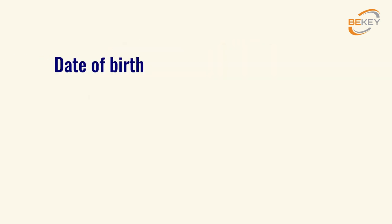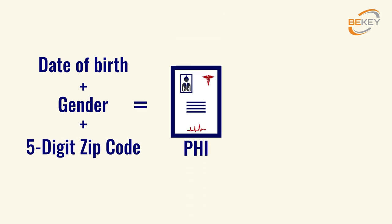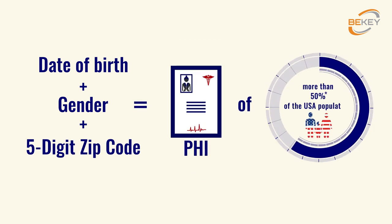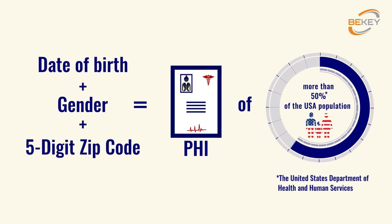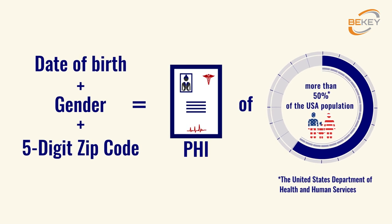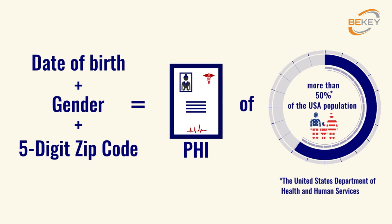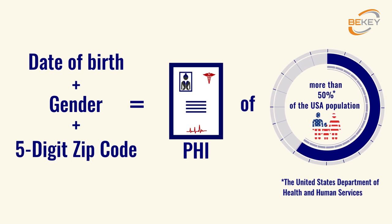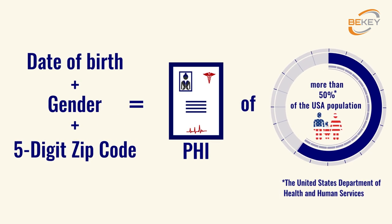Here is an example of a small data set compromising people's privacy from the United States Department of Health and Human Services. More than 50% of United States residents can be identified only through date of birth, gender, and five-digit zip code. So monitor the process carefully and make sure your de-identified data won't overlap with other more detailed data sets.